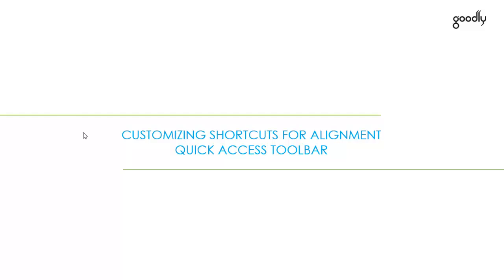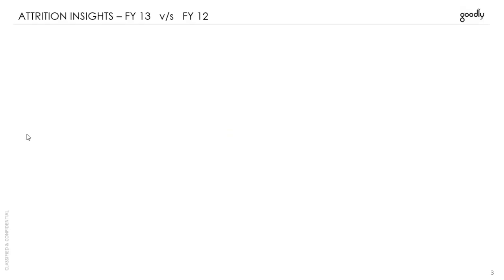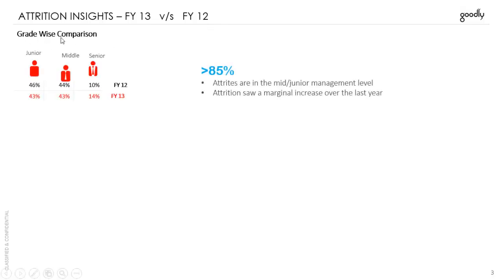In the last session I presented a problem where the alignment was not proper in a particular slide and we went to the format tab of PowerPoint to get rid of that problem. Let me introduce you to the problem here. This is a slide for a company trying to get some insights about attrition in financial year 13 versus financial year 12. Let's have a look at the slide.